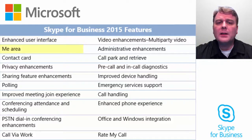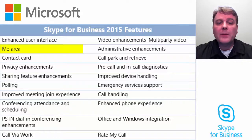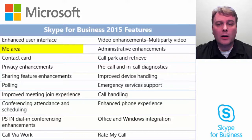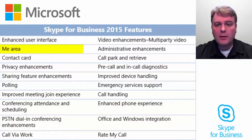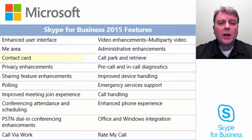Next is the Me area. The Me area provides location enhancements, activity feed, and photo features. Skype for Business 2015 can detect the location of users as they travel between home and work, thereby allowing their contacts to see whether they are on the road or in a different building. In case of an emergency, E911 services can find users easily.